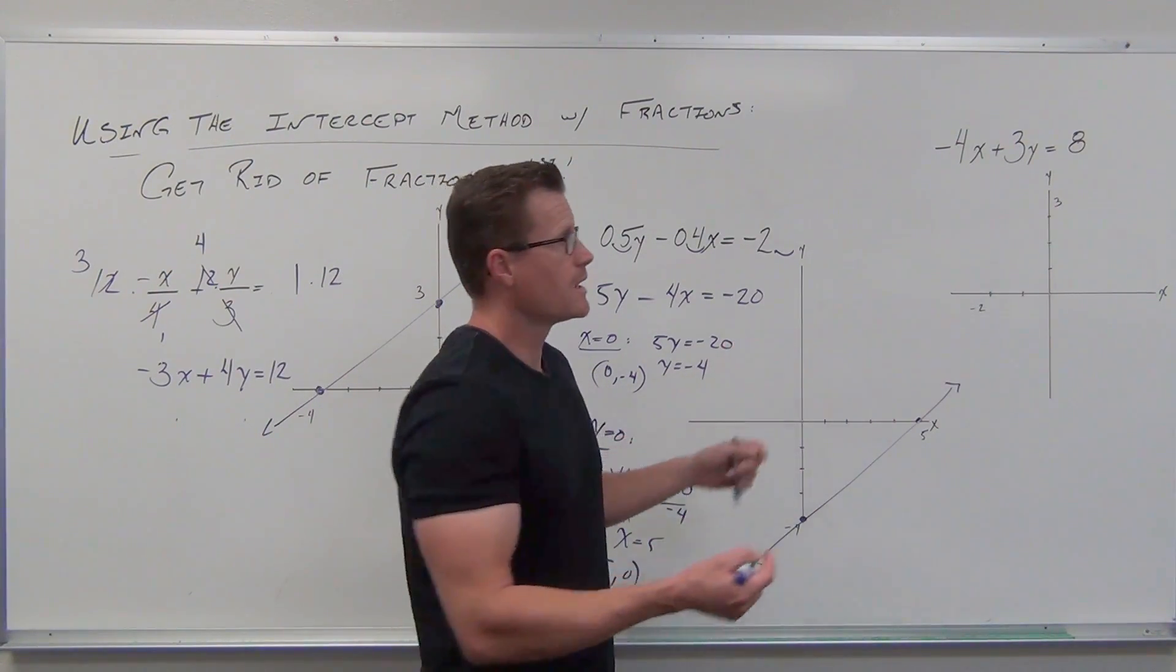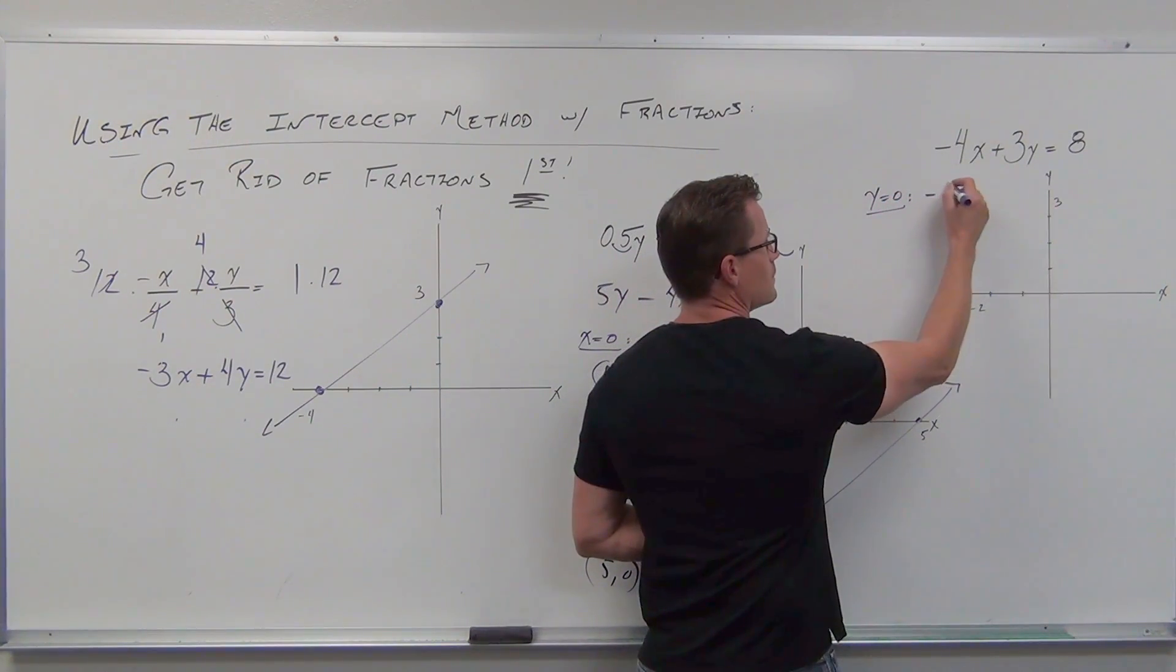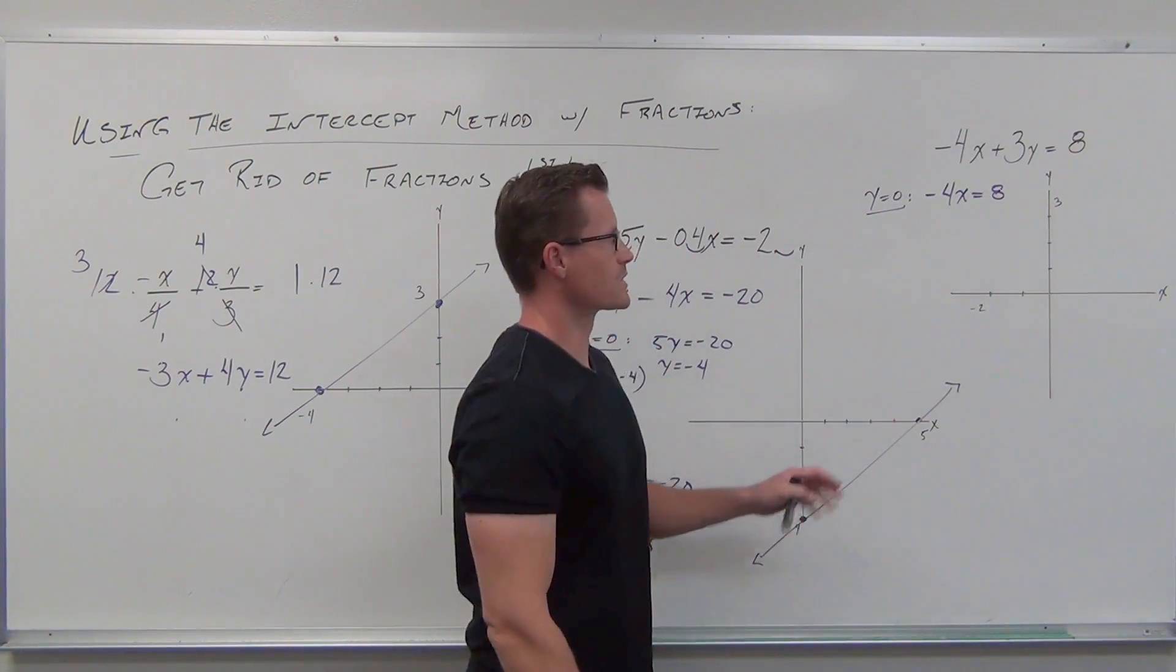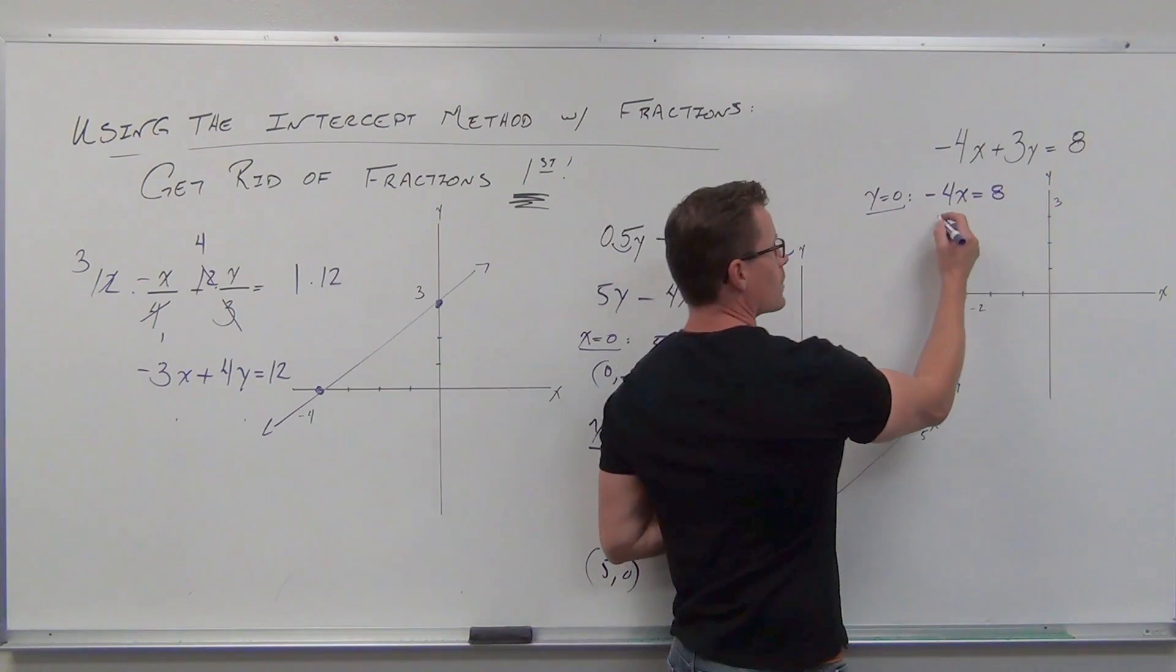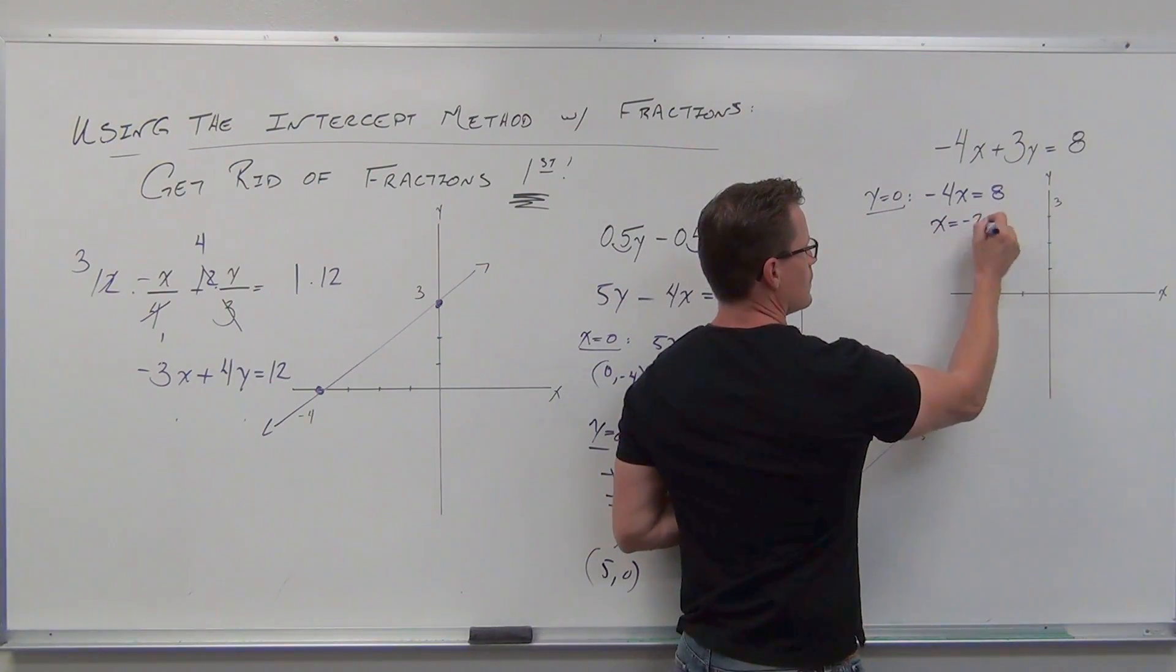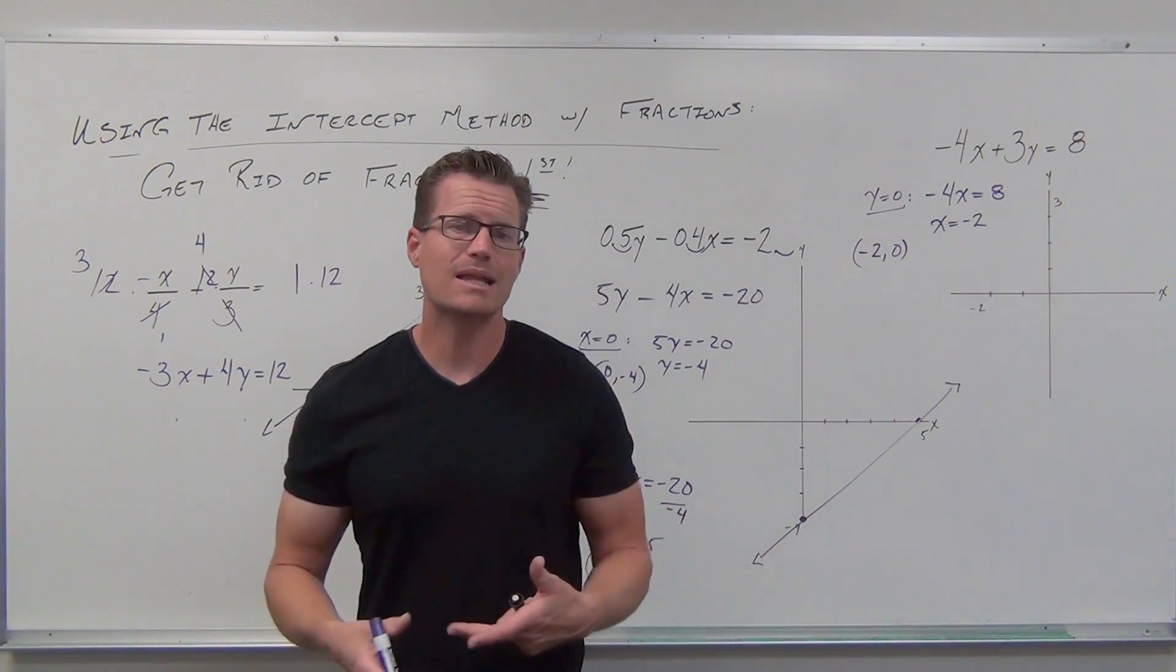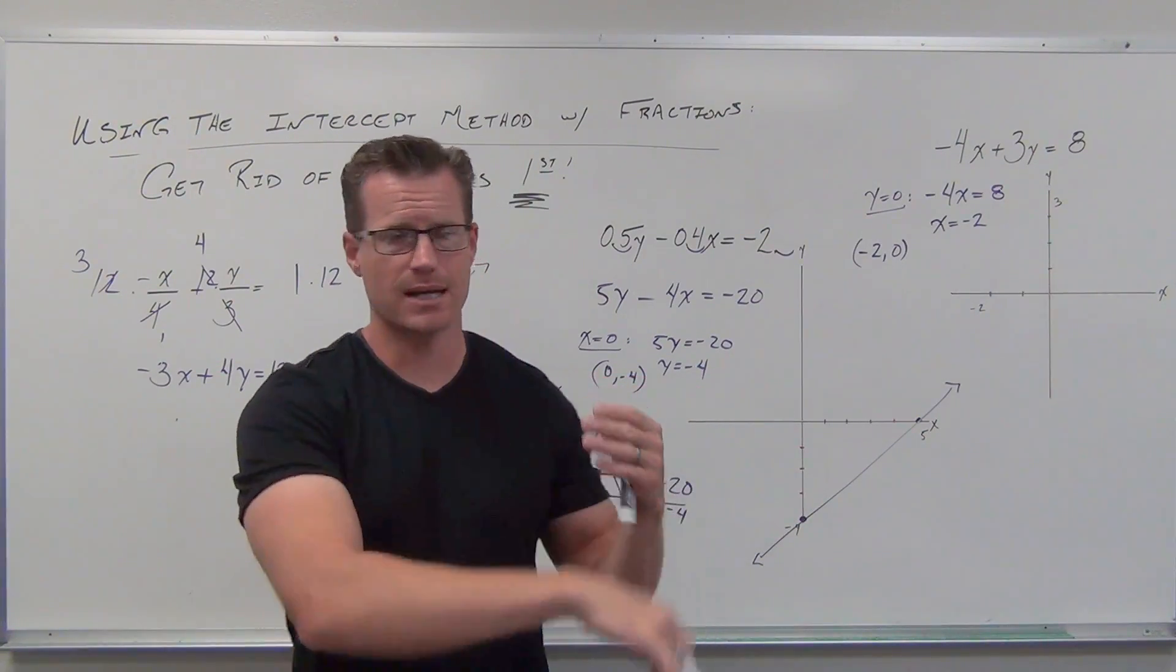So it works fine. If you let y equal zero, which gives us negative 4x equals 8—that term's gone when y is zero—and you divide by negative 4, we get an x-intercept of negative 2, zero, which is exactly what setting the y-coordinate equal to zero has to give us, something on the x-axis.